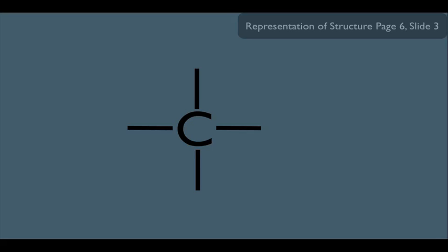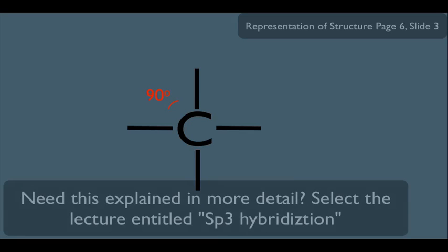And if you analyze this structure, you'll see that the bond angles are 90 degrees. But remember, we learned in a previous online lecture that that is not the true bond angle for an SP3 hybridized carbon.